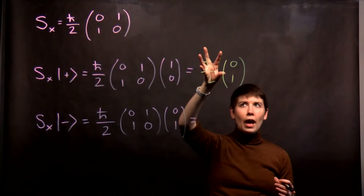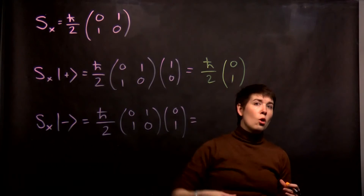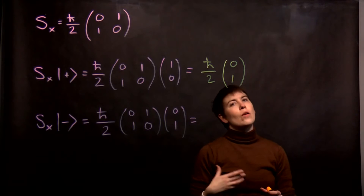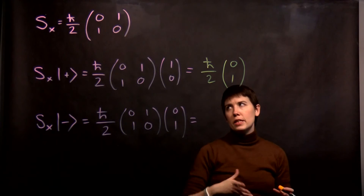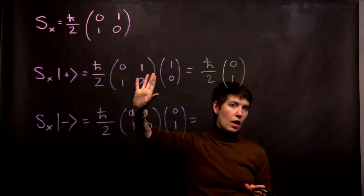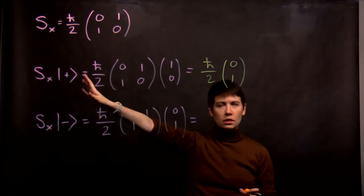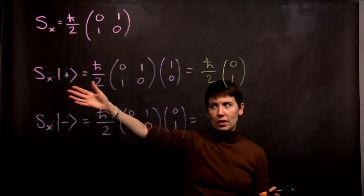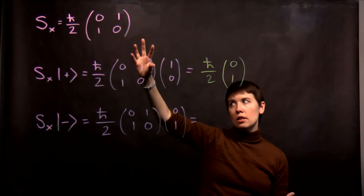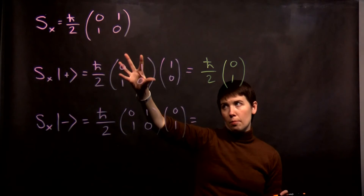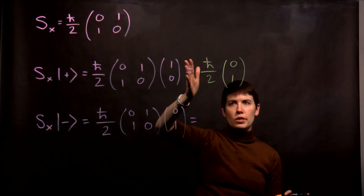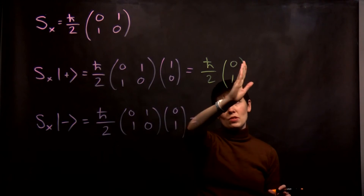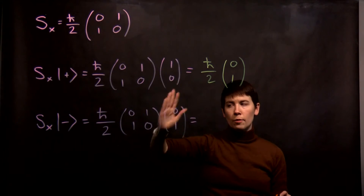How we then actually interpret what value we get and with what probability, we have to do more work for that. Right here, I'm just showing the process of applying the operator to our state and that it's not the same state we got back.